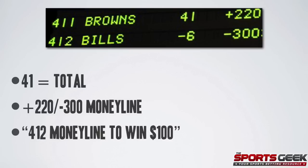In our second example, you'll notice a couple of things that are different. First, you'll see a 41 above the point spread — this represents the total, or the over-under. This will always be above or below the point spread, and you'll be able to differentiate between the two because the point spread will always have a negative in front of it, while the total will not.